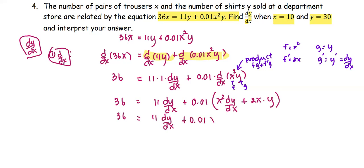So we have 36 = 11 dy/dx + 0.01x² dy/dx + 0.02xy. And we are going to compute dy/dx when x = 10 and y = 30. Put it in.